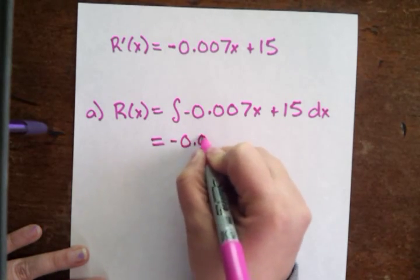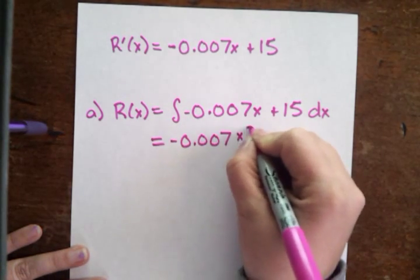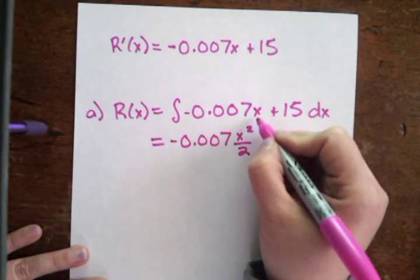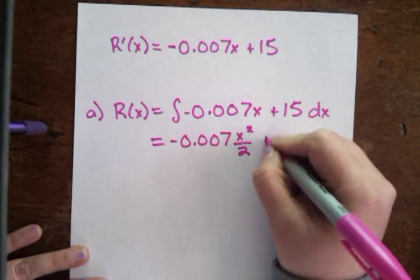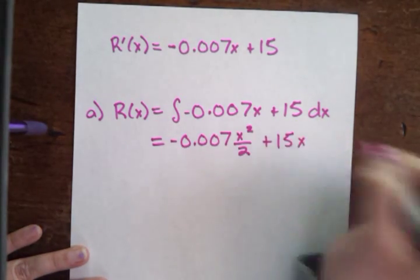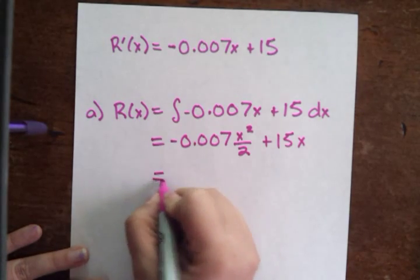That's negative 0.007x squared over 2, because the integral of x is x squared over 2, plus 15x. We can simplify that.